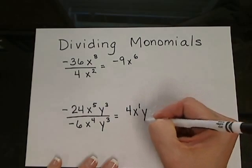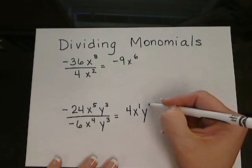And then y to the 3rd divided by y to the 3rd. We subtract the exponents, we get y to the 0.